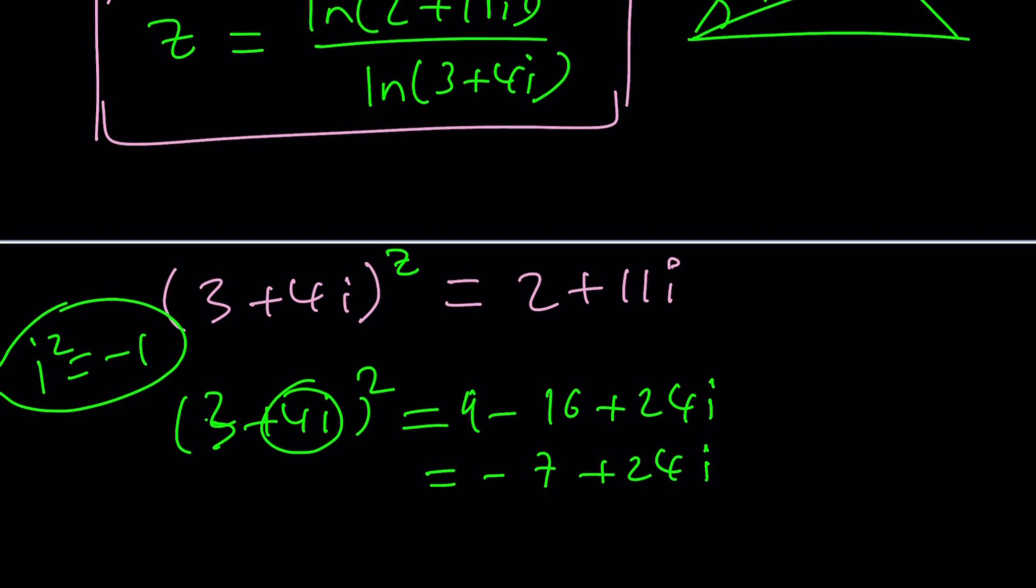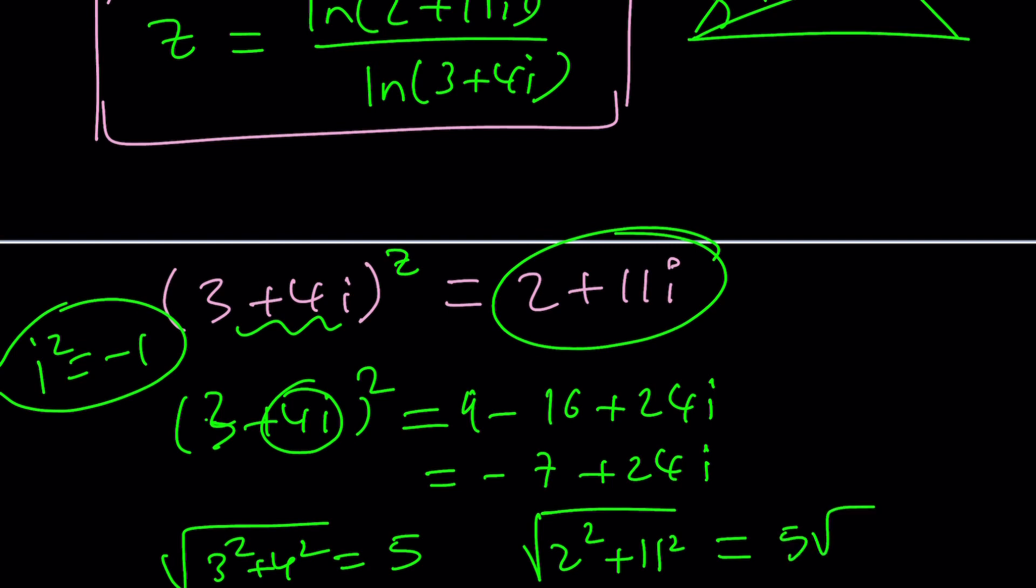Okay, great. So at this point, I want you to think about what's called modulus of a complex number. What is the modulus of the base? Square root of 3 squared plus 4 squared. That's 5. What about the modulus of the right-hand side? That should give us an idea, right? Well, probably. 2 squared is 4 and that is 125. Uh-oh, that is 5 root 5.